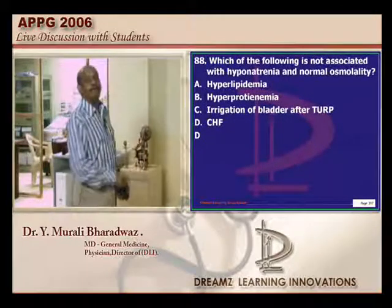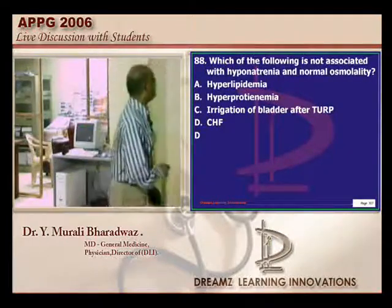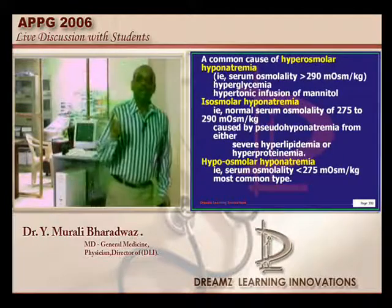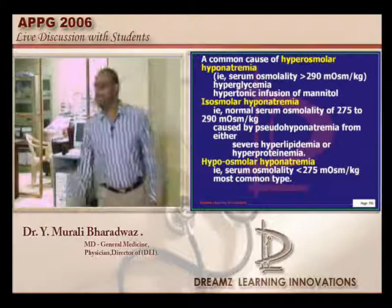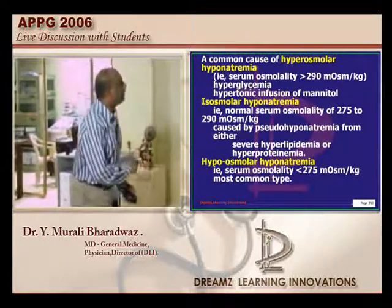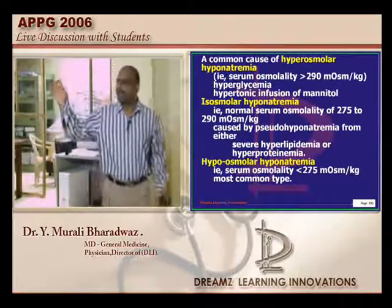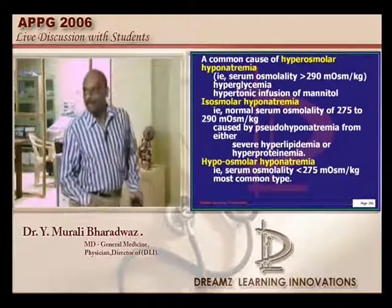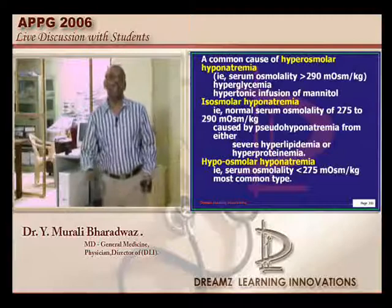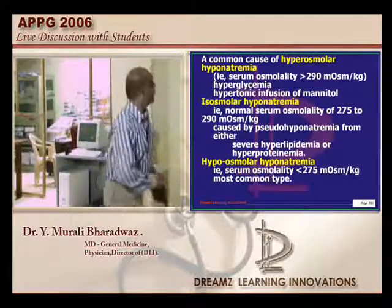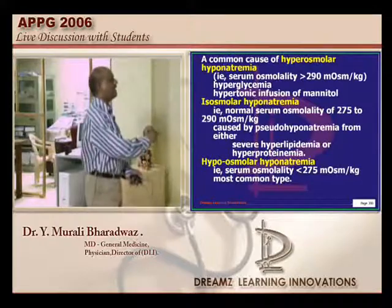In which condition is normal osmolarity with hyponatremia seen? There are three osmolarity states where hyponatremia can exist: hyperosmolar, iso-osmolar, and hypo-osmolar hyponatremia. There are only two important causes for hyperosmolar hyponatremia: number one, if the patient has diabetes with hyperglycemia — the glucose pulls fluid from intracellular to extracellular compartment leading to dilutional hyponatremia; number two, if a lot of mannitol has been given in a cerebrovascular accident patient.